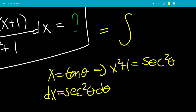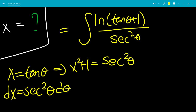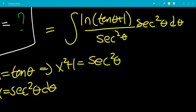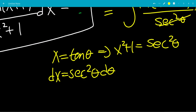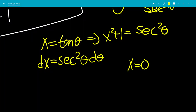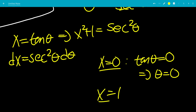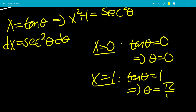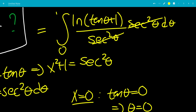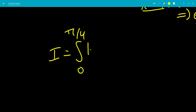We'll look at the bounds shortly. The integrand becomes ln of (tangent theta + 1) all over secant squared theta, times secant squared theta d theta. The secant squared terms cancel. For the bounds: when x equals 0, tangent theta equals 0, so theta equals 0; when x equals 1, tangent theta equals 1, so theta equals pi over 4. This gives us the integral from 0 to pi over 4 of ln of (tangent theta + 1) d theta, which we call i.